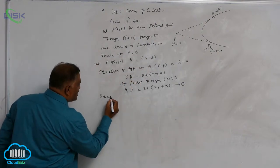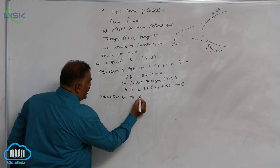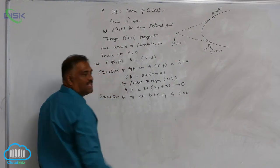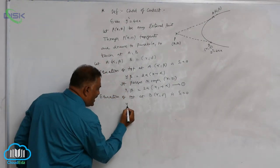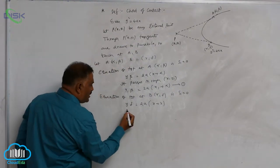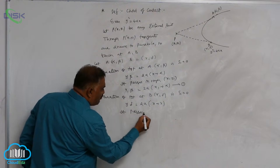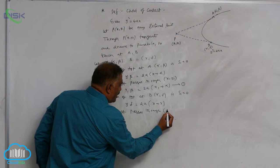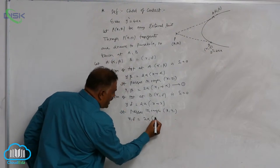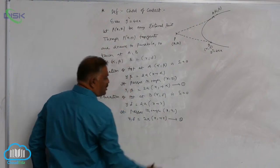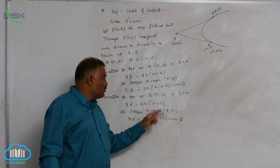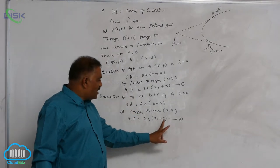Again, the equation of tangent at B(γ, δ) is S1 equal to 0, giving: y·δ = 2a·(x + γ). This also passes through point P(x1, y1), so: y1·δ = 2a·(x1 + γ). Call this Equation 2. Observing Equations 1 and 2, in place of α, β we get γ, δ — meaning that particular position is always variable.